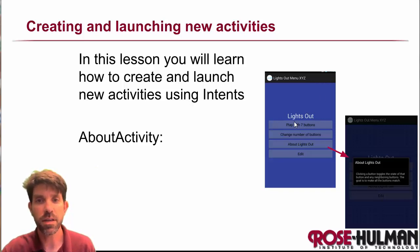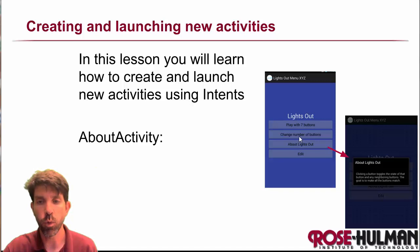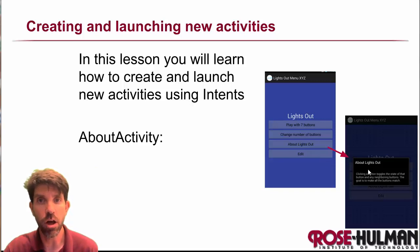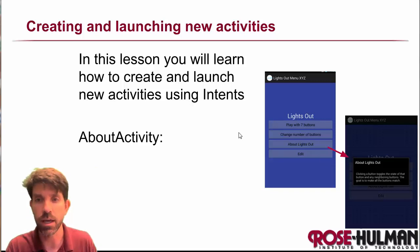Alright, so this is where things get interesting. We're going to take our main activity and when we click the About Lights Out button, we want it to launch another activity that tells us about the Lights Out game — gives us a little description. So we're going to need one activity to create and then actually launch another one: our first step in making multi-activity apps.